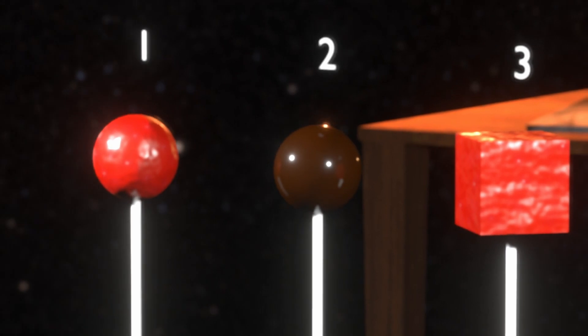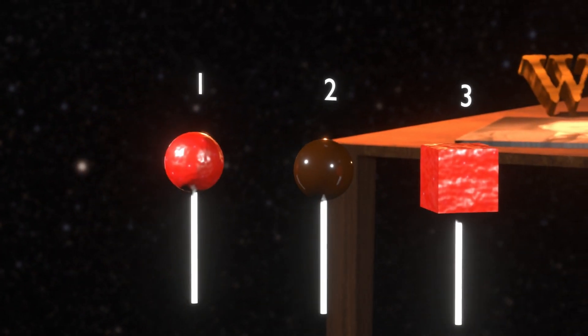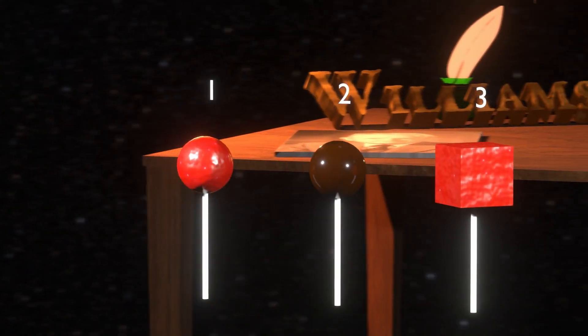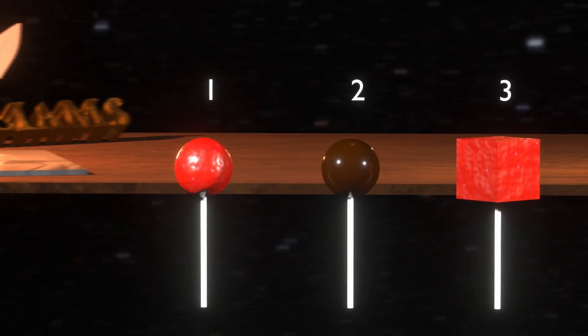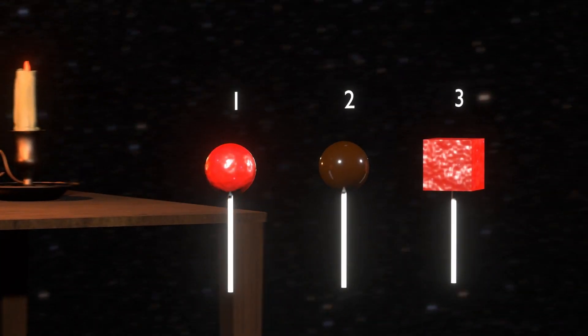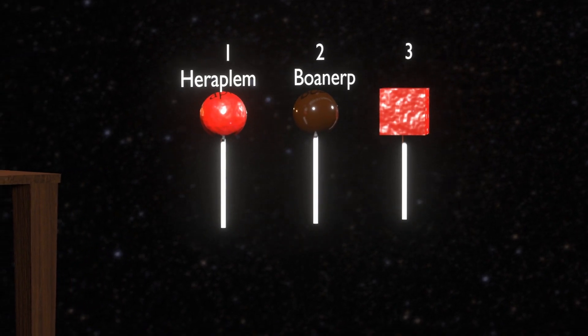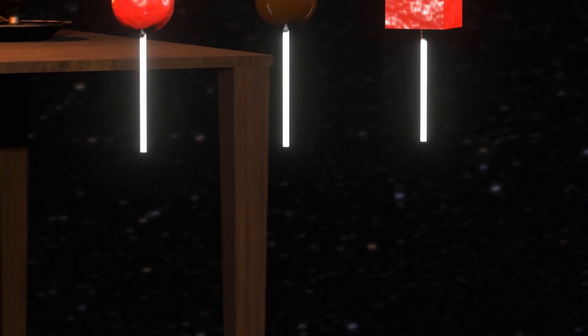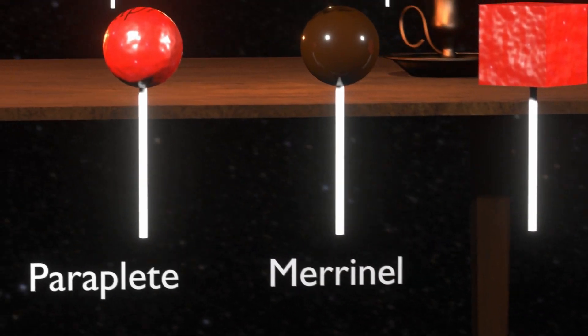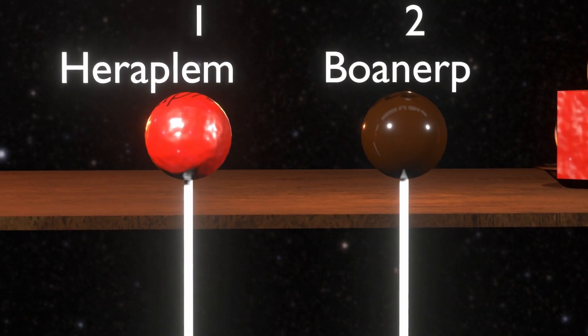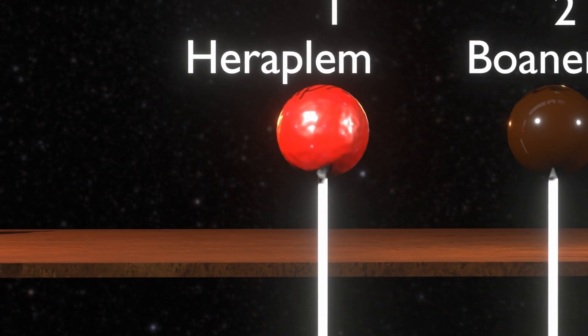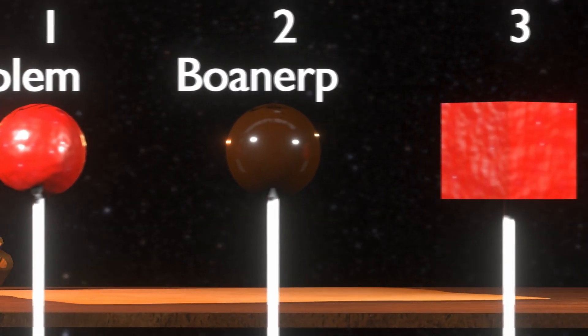Let's talk about lollipops. Williams wants us to consider three lollipops. Each of these three lollipops are similar in some respects, but also different in other respects. Williams begins by giving names to the first two lollipops: Heraplum and Boanerp. A part of each lollipop consists of a stick, which is also given a name: Paraplete and Merinal. The whole particular lollipops, Heraplum and Boanerp, are similar in the way that their sticks are exactly similar.